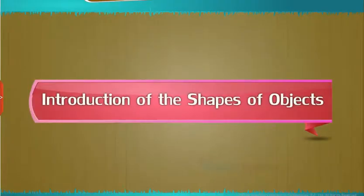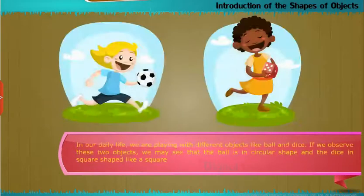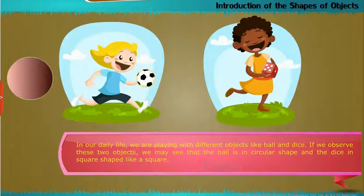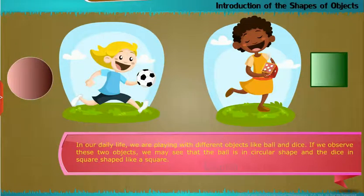In our daily life, we are playing with different objects like ball and dice. If we observe these two objects, we may see that the ball is in circular shape and the dice is in square shape, like a square.